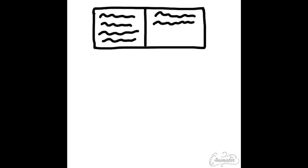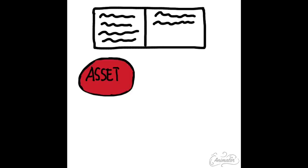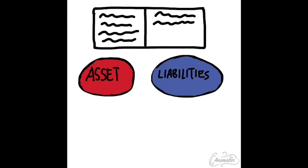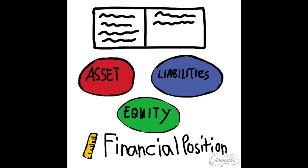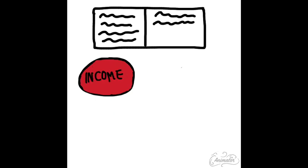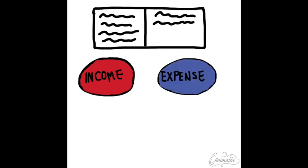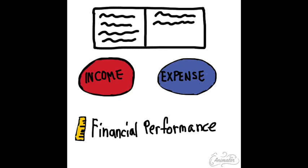So if she is going to present the financial statement, she has to present the information of her assets, liabilities, and equity — which is directly related to the measurement of the financial position. And also the information about the income and expenses, which is directly related to the measurement of the financial performance of the company.